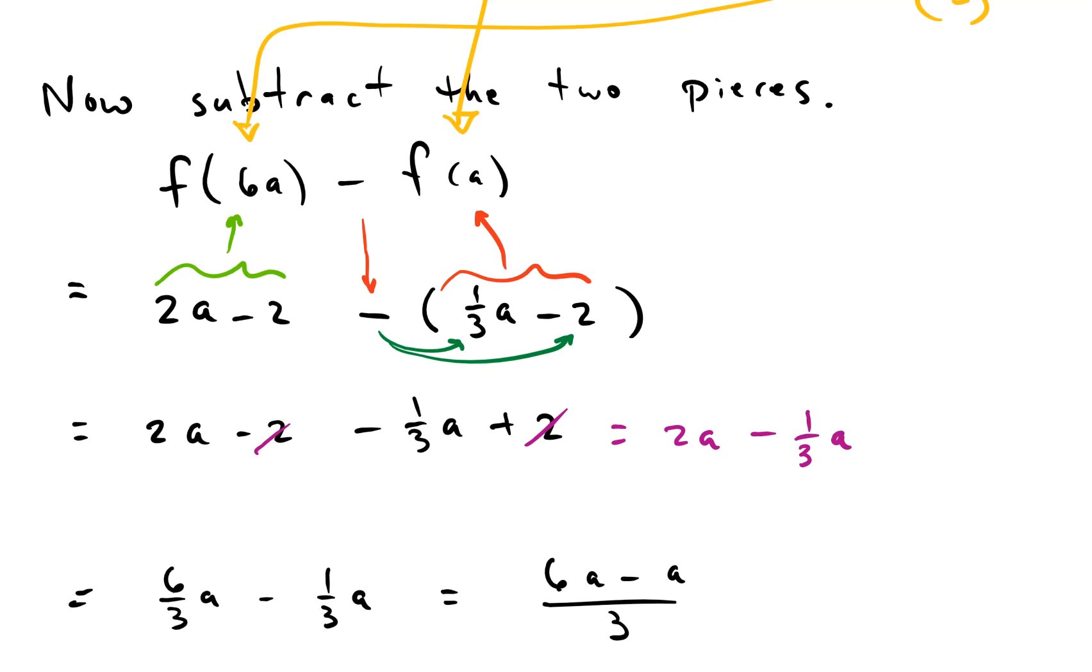We can't add these two together until they have the same base—with fractions, the same denominator. So let's make the 2 into something with a 3 in the denominator. So how about we multiply by 3 over 3?